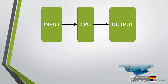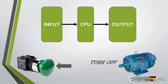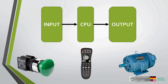Suppose that we have an electrical motor on a push button. We want the motor to turn on when the button is pressed. When the button is pressed again, we want the motor to turn off. This function is similar to the function of the power button on your TV remote.